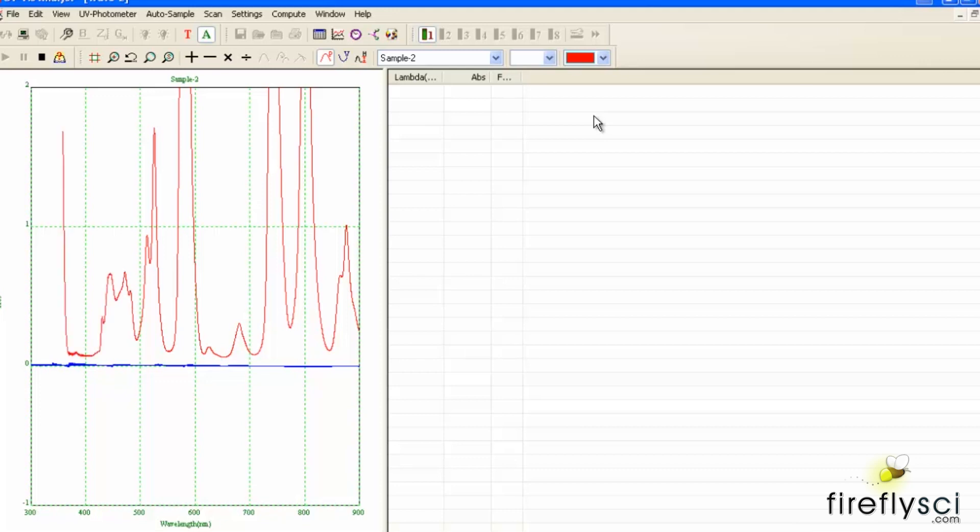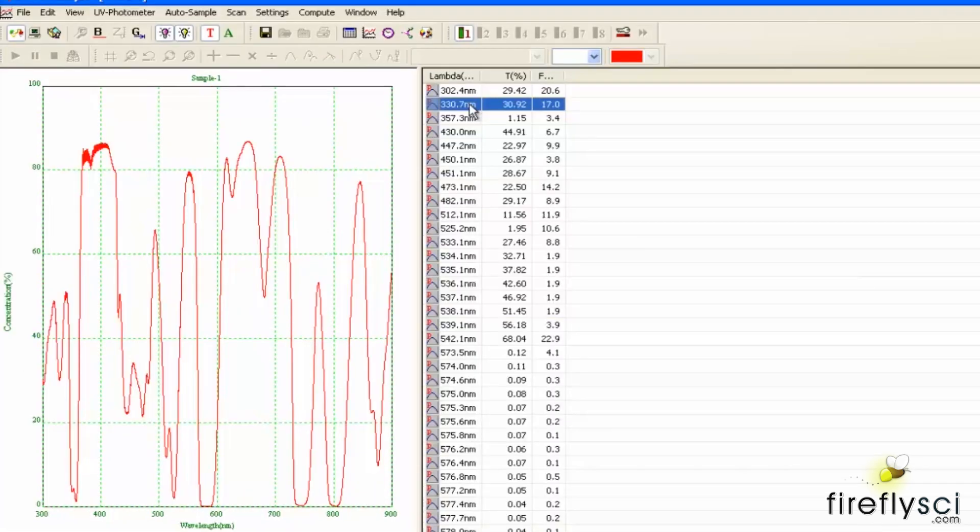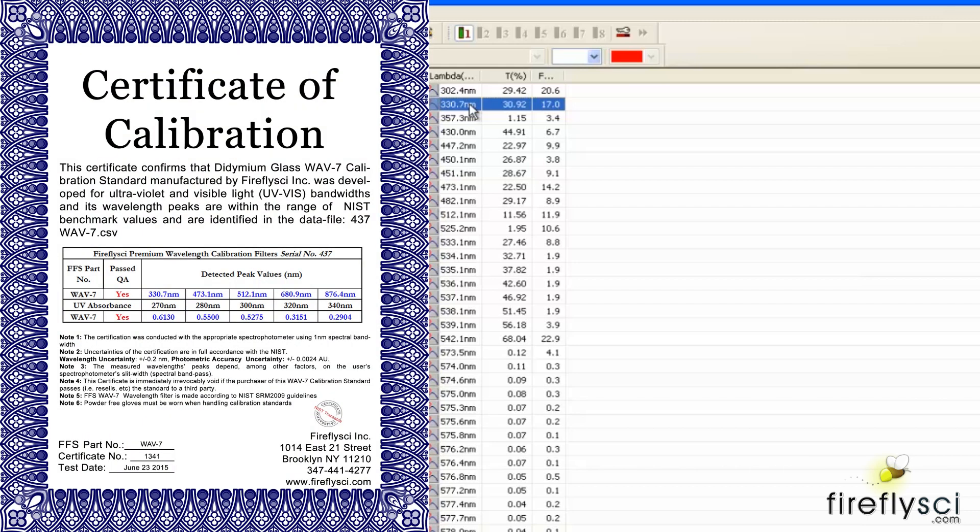Now we just compare the peaks with what is on the certificate of calibration. So let's examine the first three peaks here. Here our certificate is showing our first peak at 330.7 nanometers and our machine has a perfect match of 330.7. The next peak up is 473.1 which again we show a perfect match. And the third one is 512.1 and again we have a perfect match. So our machine is perfectly calibrated according to the WAV 7 filter.